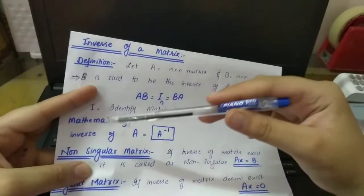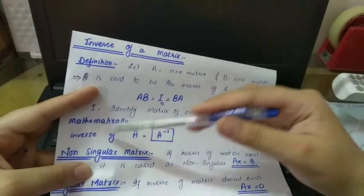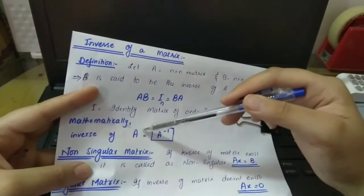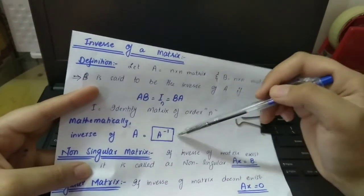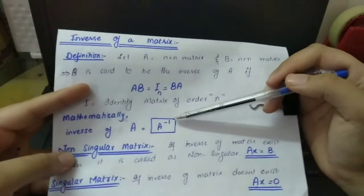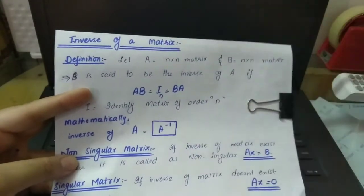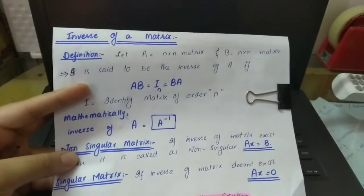Mathematically, how do we show the inverse of A? If we show the inverse of A, we denote it as A⁻¹. I will explain this concept a little bit more.